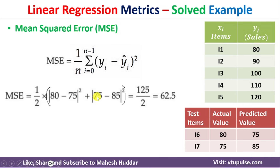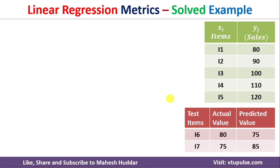Putting the values into the equation: MSE = (1/2) × [(80 − 75)² + (75 − 85)²]. Solving: 80 − 75 = 5, 5² = 25; 75 − 85 = −10, (−10)² = 100. So 25 + 100 = 125, divided by 2 = 62.5. Therefore the Mean Squared Error is 62.5.